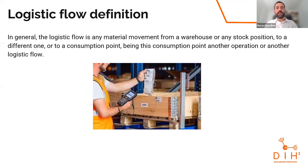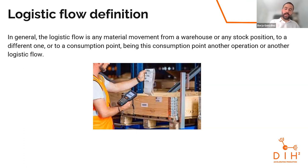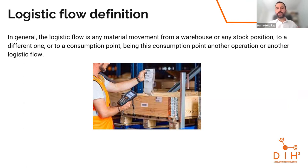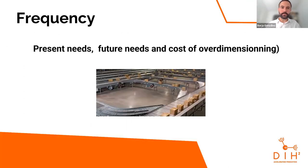In logistic flows, the general definition is: a logistic flow is any material movement from a warehouse or stock point to a different one or to a consumption point. For example, moving a part or pallet from one side of the warehouse to another, or taking a part to a consumption point where it's installed in the product being manufactured. These flows are differentiated from point A to point B. We also need to be aware of present needs and future needs to lower the cost of over-dimensioning.